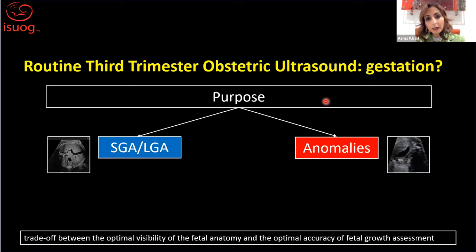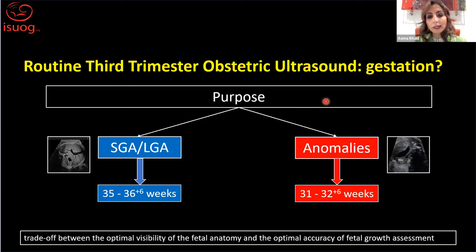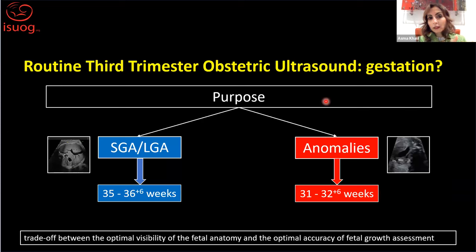The trade-off is between the optimal visibility of fetal anatomy, which tends to be more difficult the later in gestation, and the optimal accuracy of fetal growth assessment — because we know that the later the scan in the third trimester, the more accurate it will be for detecting small or large babies. If your focus is mainly growth, you should plan the routine third trimester scan at about 35 to 37 weeks, but if you want to look for anomalies, it should be earlier, at 31 to 33 weeks.